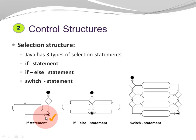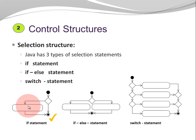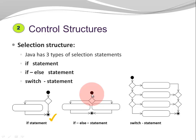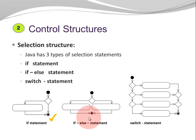Each of these statements has a corresponding activity diagram. In the if statement, I start, I reach a decision based on my condition, I execute some code, or maybe not. In the if-else statement, I start, I reach a decision based on my condition, I do one thing or another, and then I'm finished.